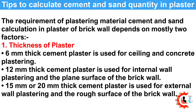Tips to Calculate Cement and Sand Quantity in Plaster: The requirement of plastering material depends on mostly two factors. The first is the thickness of plaster. 6mm thick cement plaster is used for ceiling and concrete plastering. 12mm thick is used for internal wall plastering and the plain surface of the brick wall. 15mm or 20mm thick is used for external wall plastering and the rough surface of the brick wall.